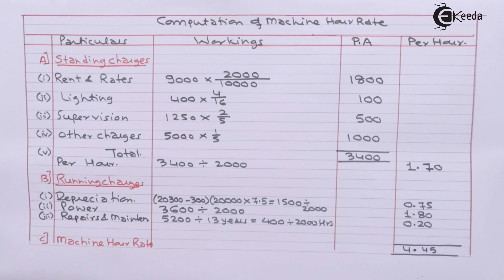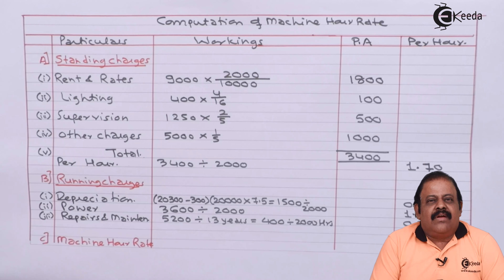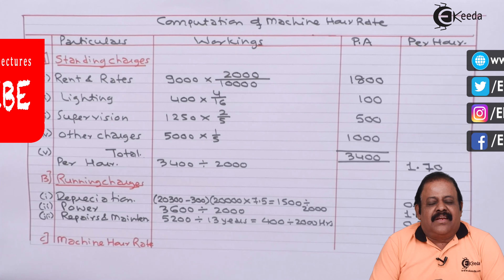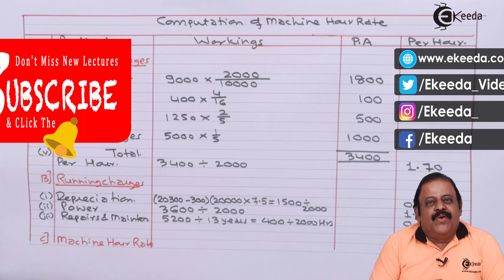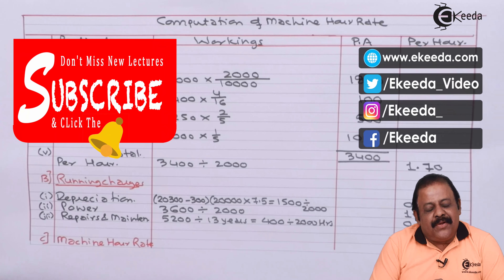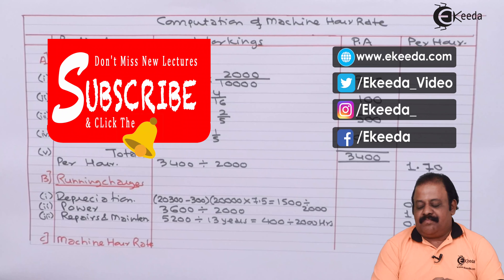We can now add all expenses to arrive at the machine hour rate. The machine hour rate is Rs. 4.45. In this question, we have learned how to calculate machine hour rate where 5 identical machines are given. Thanks for watching this video. Stay tuned with Ikeda and subscribe to our channel.